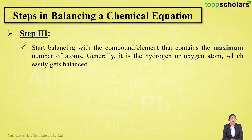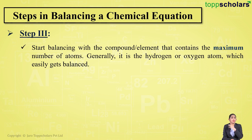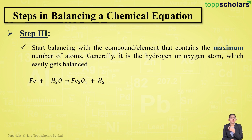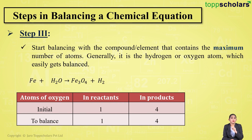Step number three is to balance the reaction. Start with the element that has the maximum number of atoms. Generally, hydrogen or oxygen is balanced first as it is easier. In our example, oxygen had the maximum number of atoms, so we start by balancing oxygen.